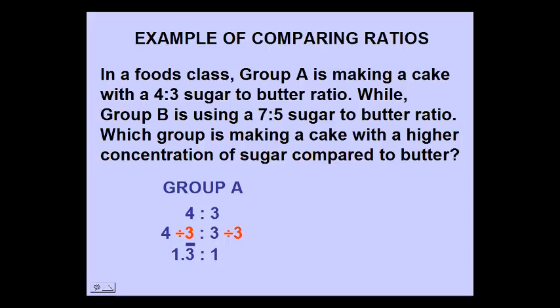Let's go try this for group B. To make the 5 a 1 and to keep an equivalent ratio, we're going to divide both sides of the ratio by 5, giving us a 1.4 to 1 ratio.